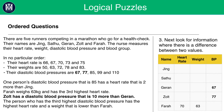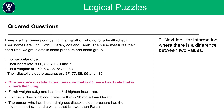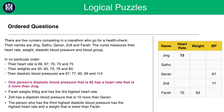We keep looking for information where there is a difference between two values. We see that the person with a diastolic blood pressure of 85 has a heart rate that is 2 more than Jing. We now need to look for heart rate values that have a gap of 2. The only two values that have this are 73 and 75. Of these two people, we have one unknown person and Jing. The unknown person has the higher heart rate, so Jing will have a heart rate of 73. We can therefore plug that value in.